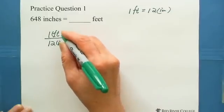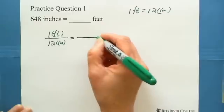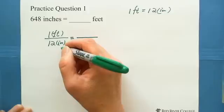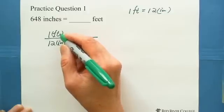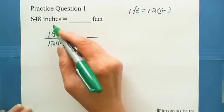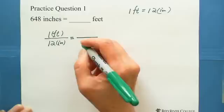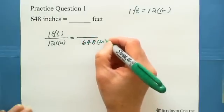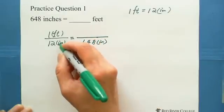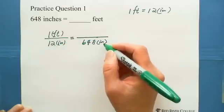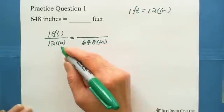But once you set up, then the other side you need to follow the direct proportion, which is the foot on the top, the other side foot on the top. Because this question we're given 648 inches, we need to put 648 inches on the bottom. 12 inches on the bottom, 648 inches on the bottom as well. So this is the direct proportion.